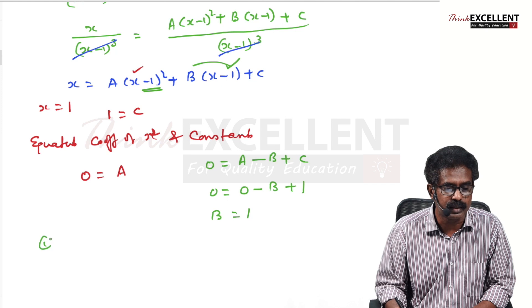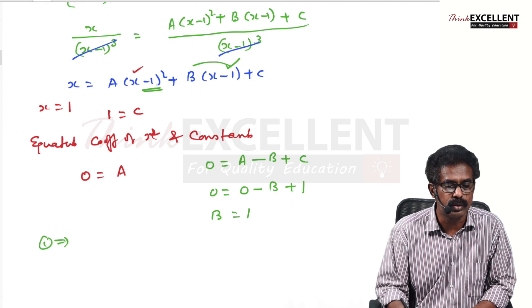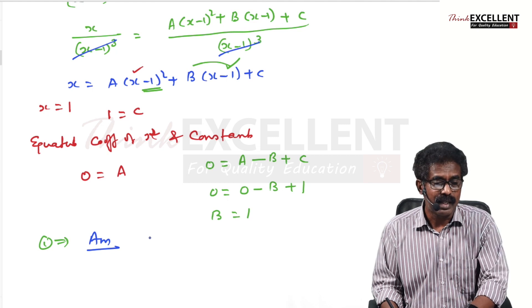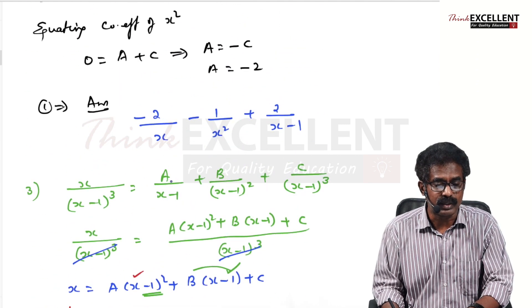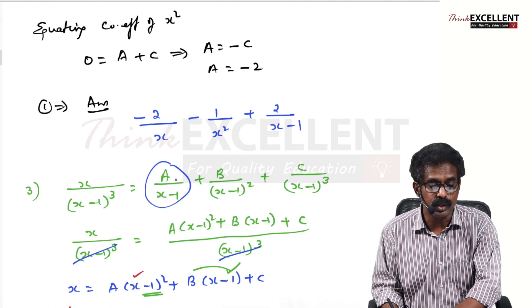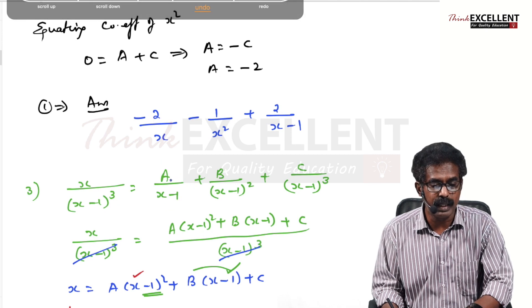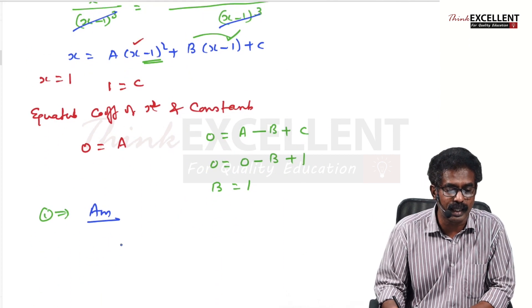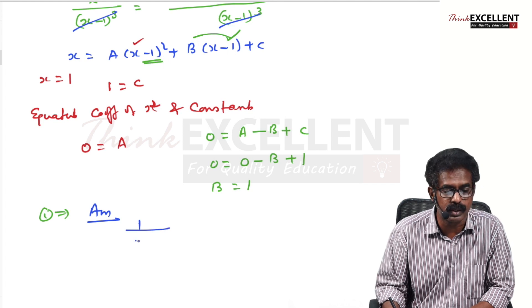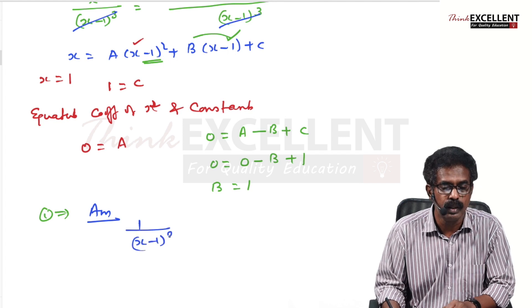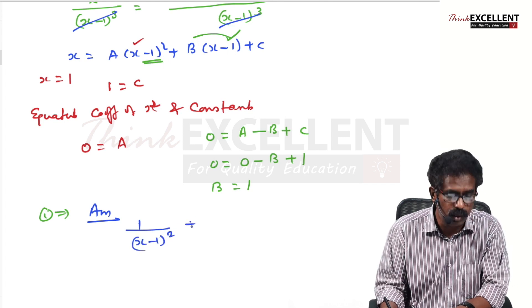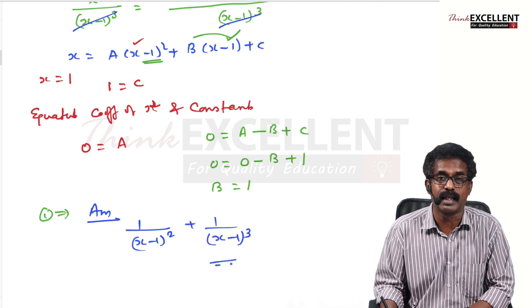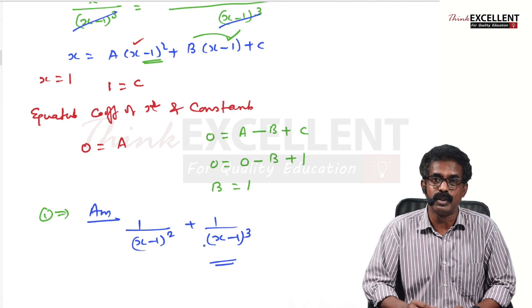Substituting into the first equation: A = 0 so the first term disappears. B = 1, so the answer is 1/(x − 1)² + 1/(x − 1)³. Hope you understood the second type of partial fractions. The third type will be taught in the next video.